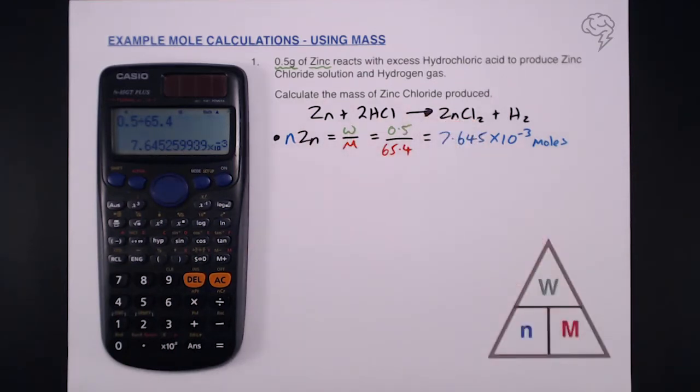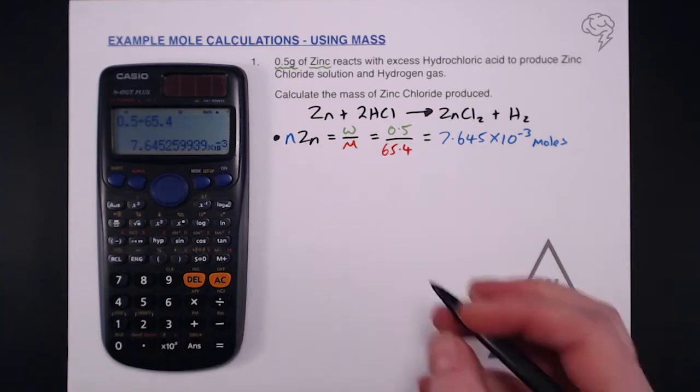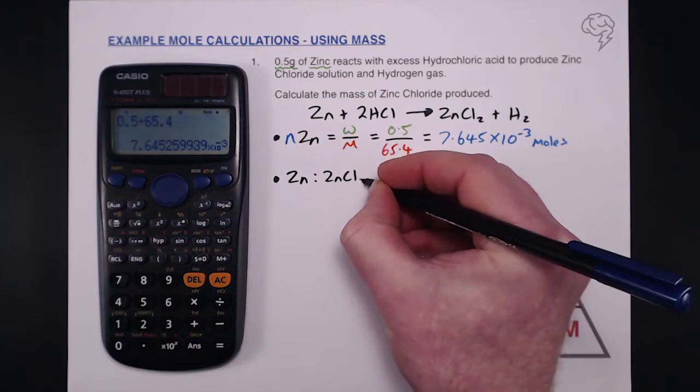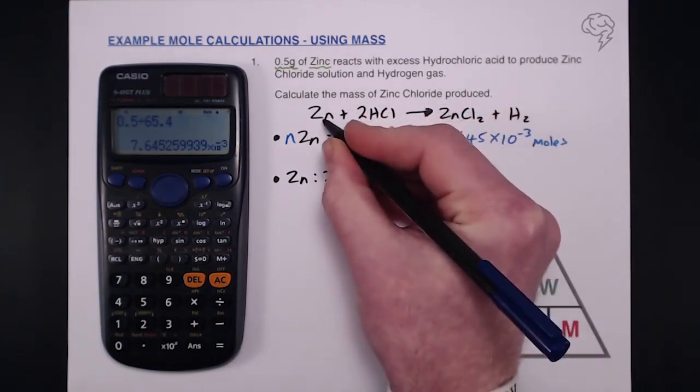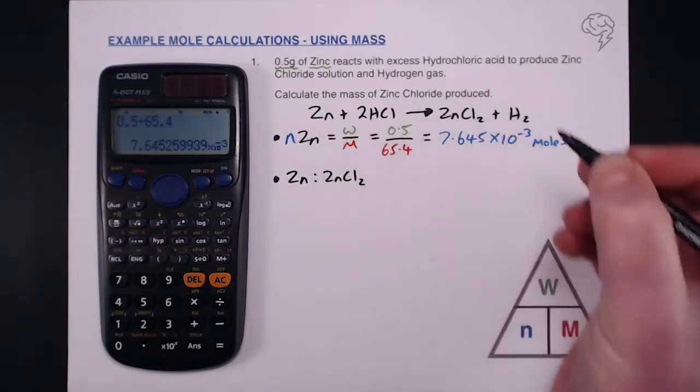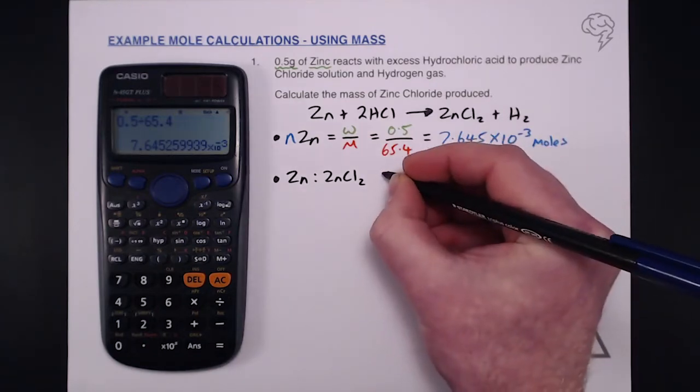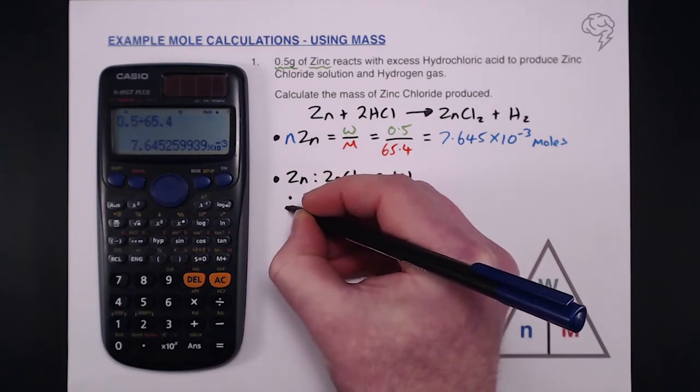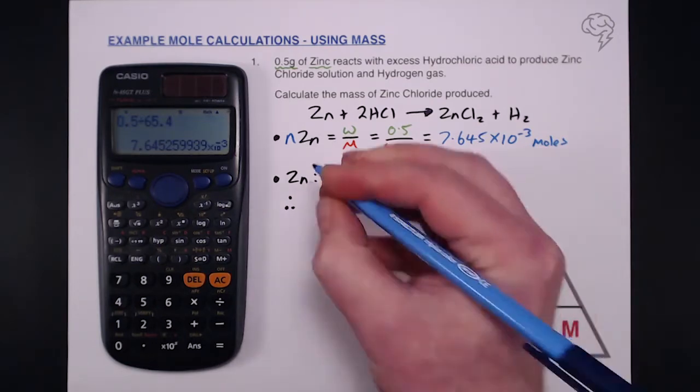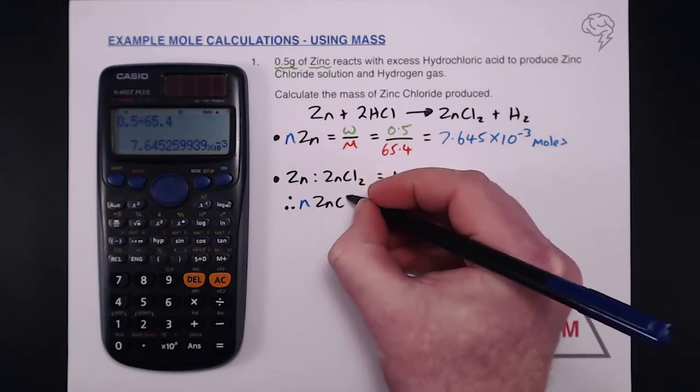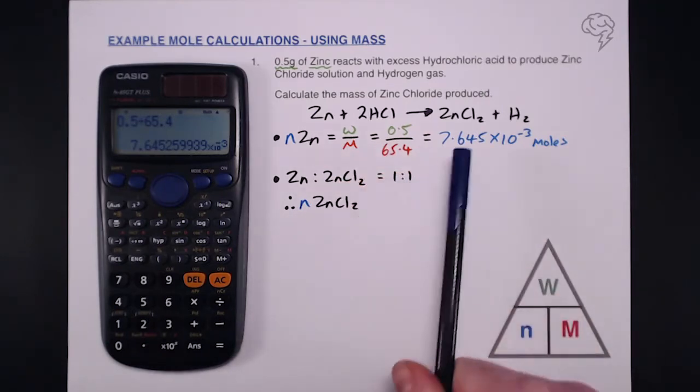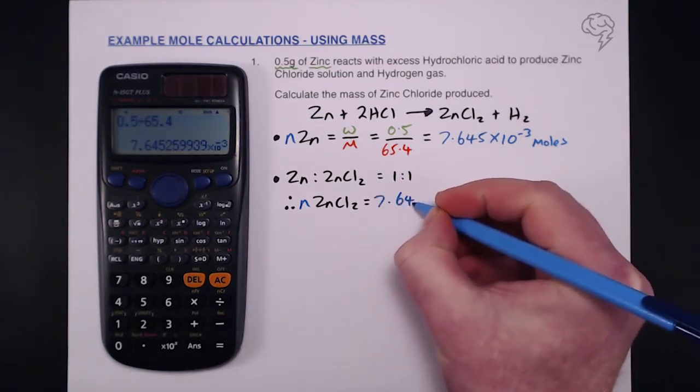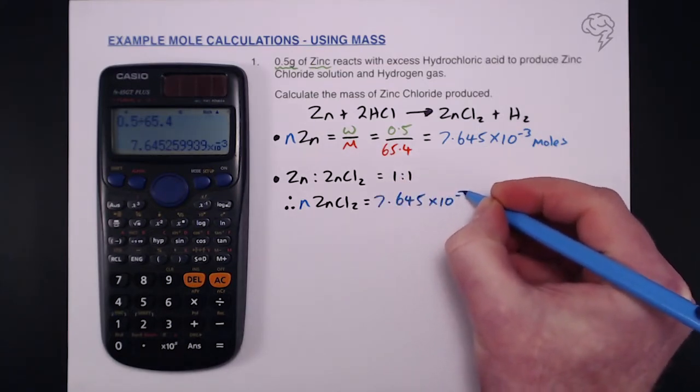Now we've found the number of moles of zinc, we need to look at the stoichiometry between zinc and zinc chloride. Zinc in ratio to zinc chloride is actually a one to one reaction. One mole of zinc goes in, one mole of zinc chloride goes out. So that equals a one to one reaction. Therefore the number of moles of zinc chloride must also equal 7.645 times 10 to the minus 3 moles.